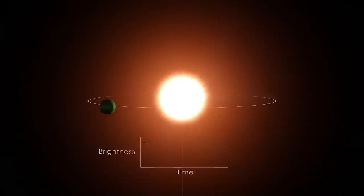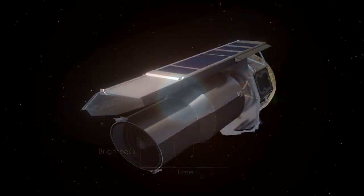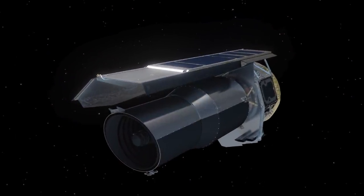TESS finds worlds like AU Mic b by catching tiny, regular dips in starlight called transits. Spitzer, now decommissioned, confirmed the transits during its final year of operations.